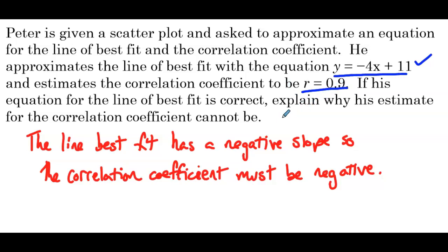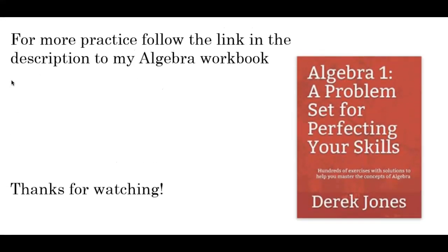Two big concepts covered here — correlation, and we looked at how to find that with the calculator. We turned diagnostics on, so now every time you run a linear regression, you're going to get that correlation coefficient as well. We also talked about causation, which has nothing to do with correlation — it's something where we look at the two data sets and think critically about whether there's a cause and effect relationship. Practice with the calculator for the correlation coefficient and see more examples to feel comfortable identifying causal relationships. Click the Amazon link below for my algebra workbook to practice on your own. Give the video a like and subscribe to see more videos like this.